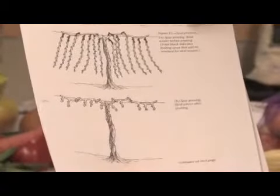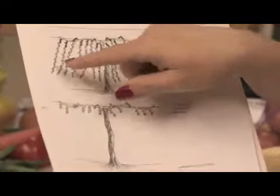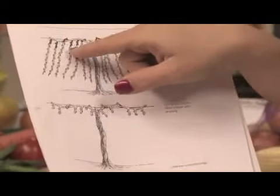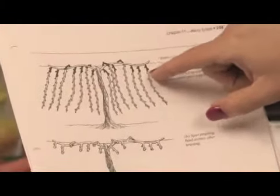Now spur pruning is different than cane pruning. On cane pruning, you're cutting everything out. With spur pruning, you're cutting it down to just a few nodes on each growth. So you're cutting all of the longer branches and just leaving the shorter branches.